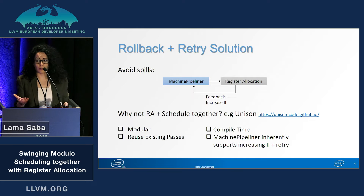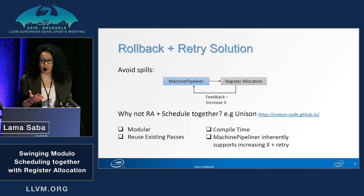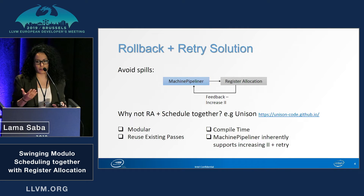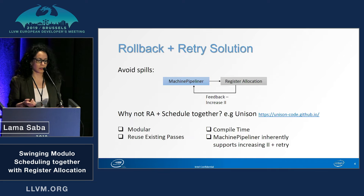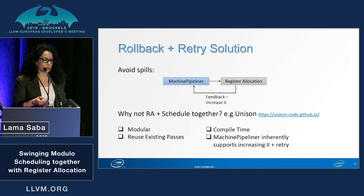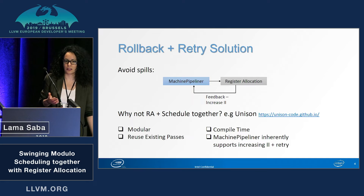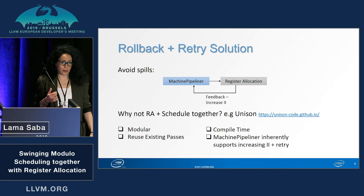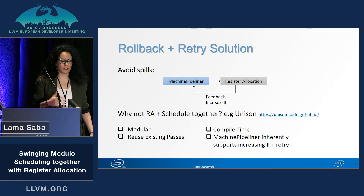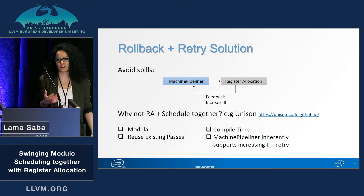Why not try to do scheduling and register allocation together, like the Unison approach? Well, we would like to reuse the existing passes and keep the modularity that exists. This is also faster for us in compile time, and the machine pipeliner inherently supports increasing the II and retrying.